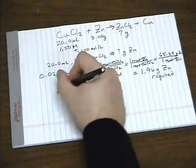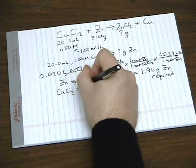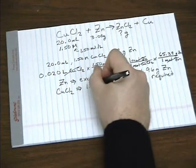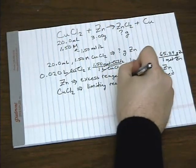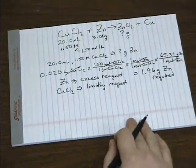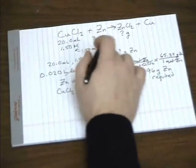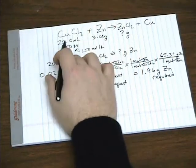So if zinc is our excess reagent, that means the copper 2 chloride is our limiting reagent. Because we only have two reactants. If one is in excess, the other must be limiting.